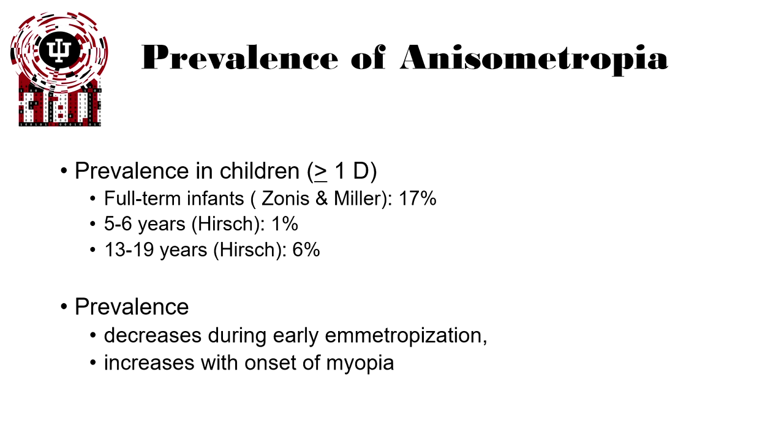Anisometropia will start to increase as we introduce myopia in the teenage years, and it will increase even further when we start to deal with disease — cataracts, cataract formation, diabetes, and elderly populations.